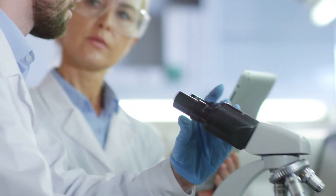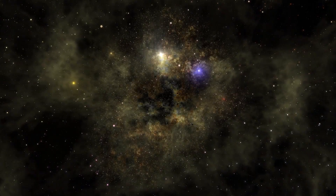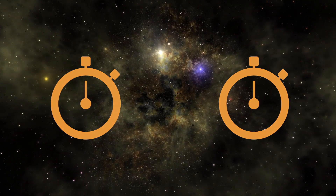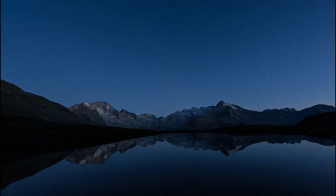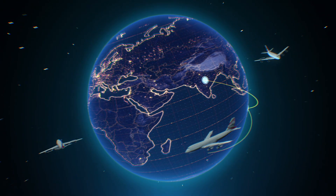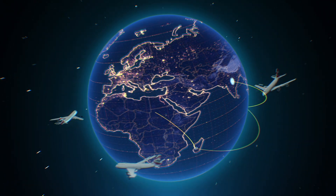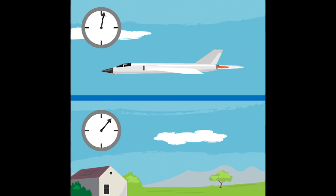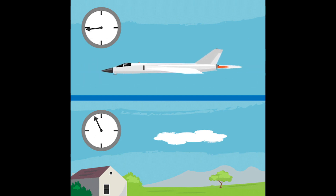Scientists have done some experiments to show that this is true. For example, there was an experiment that used two clocks set to the exact same time. One stayed on Earth, while the other flew in an airplane. After the airplane flew around the world, scientists compared the two clocks. The clock on the fast-moving airplane was slightly behind the clock on the ground — traveling slightly slower in time than one second per second.